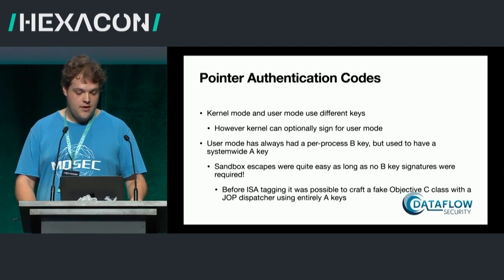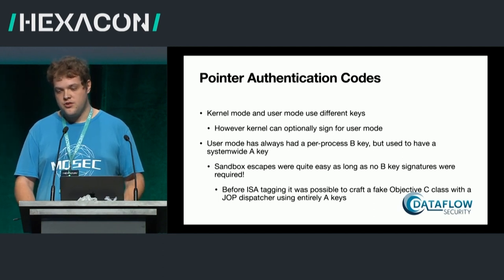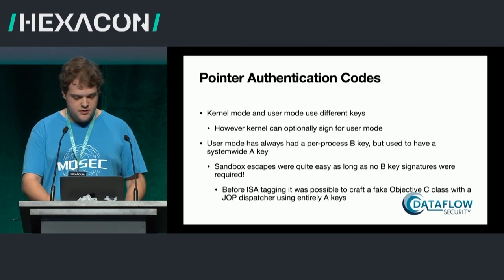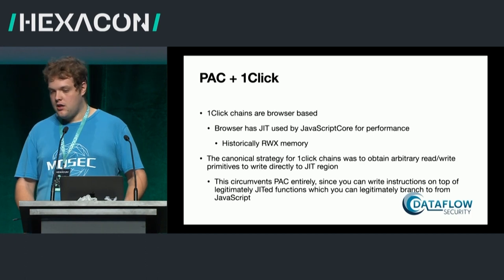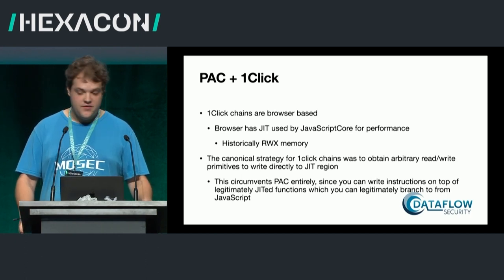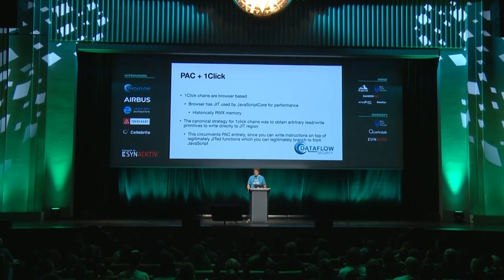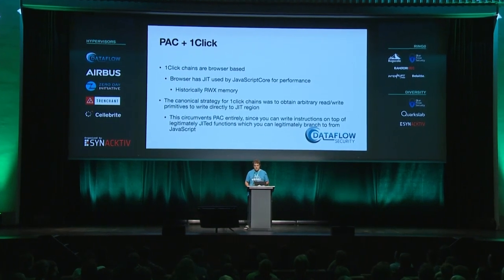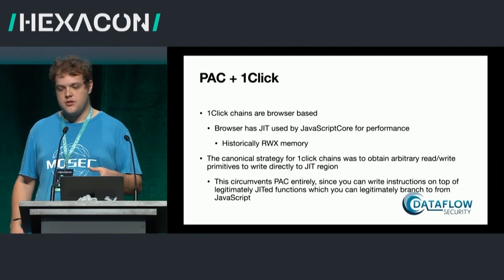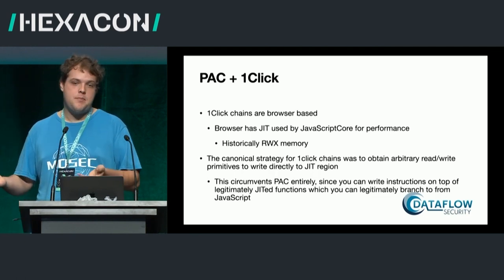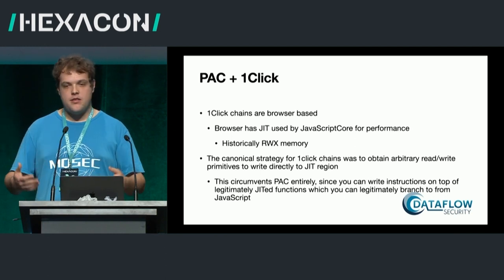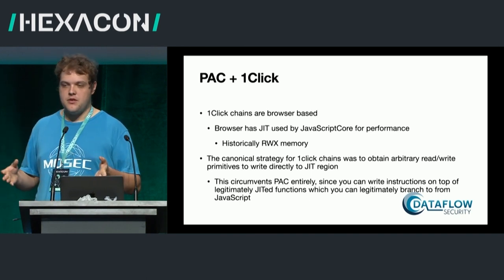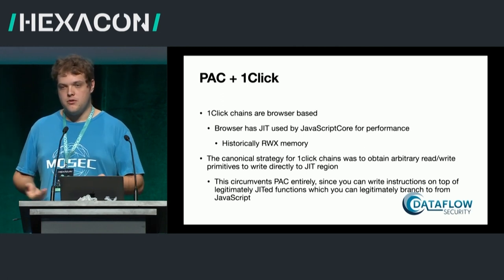Kernel mode and user mode PAC have different keys. The kernel can sign for user mode, and user mode has a per-process B key, but used to have a system-wide A key. That meant every user-mode process could generate valid signed pointers using the A key for any other process, making sandbox escapes really easy. Before ISA tagging, it was possible to craft fake Objective-C classes with a JOP dispatcher using entirely A keys — you could sign your JOP chain on one process and have another process execute it, and PAC was none the wiser. This is no longer the case. Ever since iOS 15, Apple has started to diversify the A key, so there are different A keys for different processes, making sandbox escapes much, much harder.